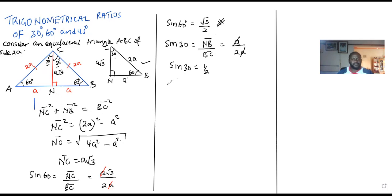Furthermore, if you go to cosine of 60, the cosine of 60 is opposite of the sine of 30. So the adjacent, which is NB, divided by the hypotenuse, which is BC. This will give me A divided by 2A. The A can be lost. Therefore, the cosine of 60 is always equal to a half.